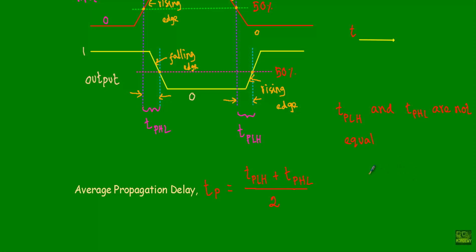Usually in digital logic families, propagation delays are in nanoseconds — meaning some nanoseconds of time are required for the input to produce the output in a logic circuit. That's it. Thank you.